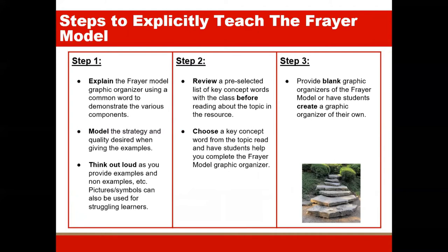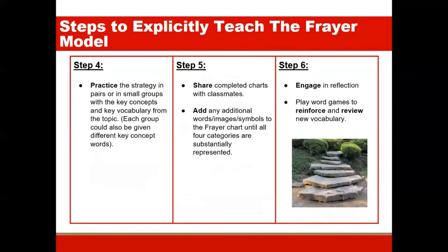Then review a pre-selected list of vocabulary words with the class that are related to the topic of the next reading resource. Choose a vocabulary word from the topic and have students help you complete the Freyer chart. Provide the students with copies of the Freyer model, or have students create their own once they are familiar with the organizer and how to use it. Next, have students practice the strategy in pairs or in small groups with the key concepts and vocabulary from the topic. Each group should be given different key concepts. Once they have completed the organizer, have them share completed charts with classmates.